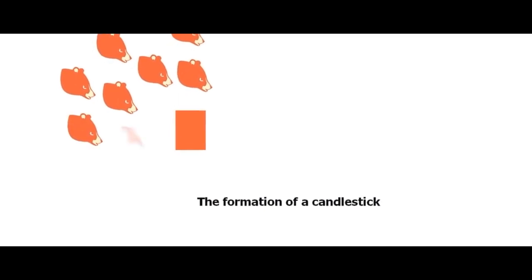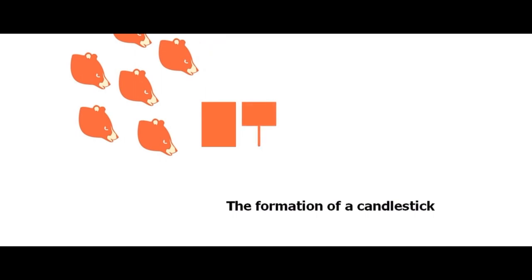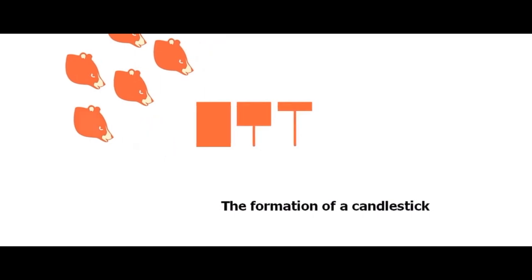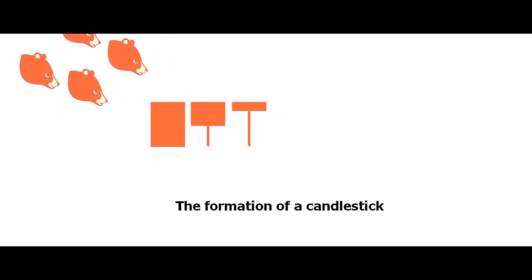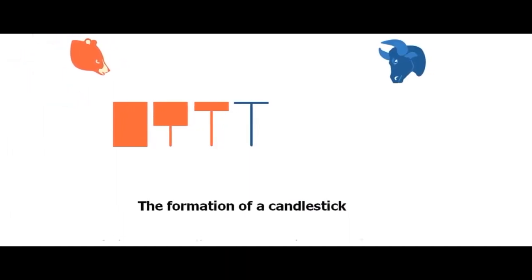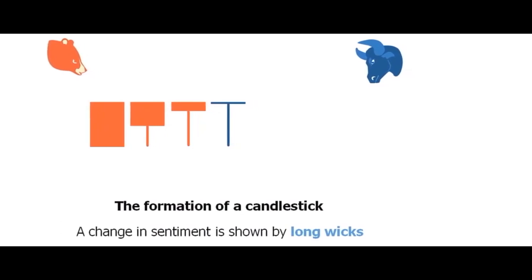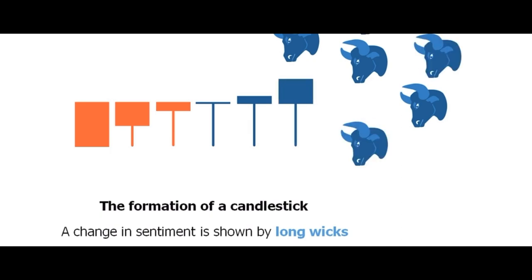The balance between the bulls and the bears can change during the formation of a candlestick. As we can see, sentiment is changing as this candle forms. The body of the candle starts to get smaller and smaller, thereby forming the lower wick of the candlestick. In this example, we see that the period started out bearish, but as sentiment changed and the bears left the market, the body of the candlestick started to retreat back towards the upside. When the balance shifted towards the bulls, the candlestick turned bullish.